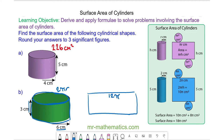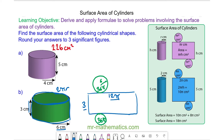The height of the cylinder forms the width of the rectangle, which is 3cm. The two circles on the top and bottom have an area of πr². The radius is 6, so this will be 36π for each circle. The area of the rectangle is 3 times 12π, which is 36π.